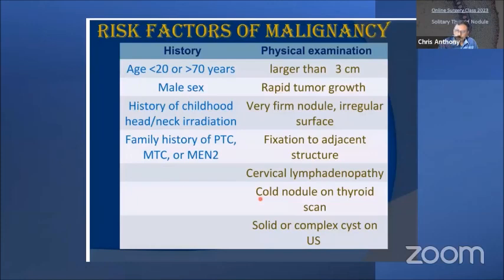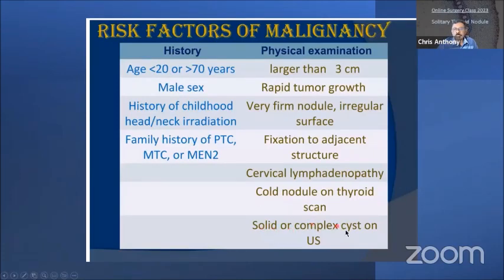On radioisotope scan, a cold nodule — meaning it doesn't take up the radioisotope — has a higher chance of being malignant than a hot nodule. Solid on ultrasound has a higher chance of being malignant, whereas a cyst is rarely malignant. That's the importance of the ultrasound — to detect whether it's solid or cystic.